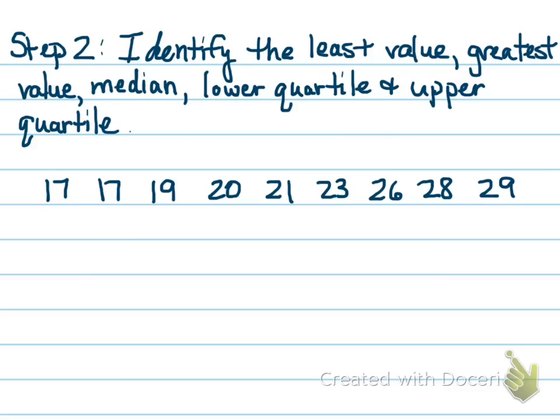Our second step is to identify the least value, the greatest value, the median, the lower and the upper quartiles. So let's start off with what we already know. We know the least and we know the greatest. That one's pretty simple. 17 is the least. 29 is the greatest. So we've got the least and the greatest identified.